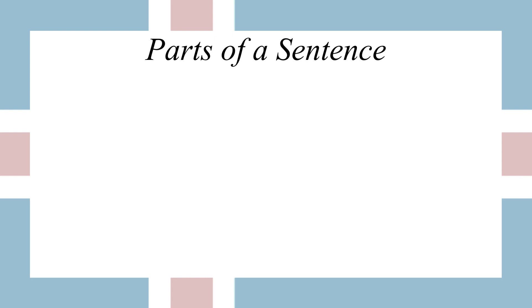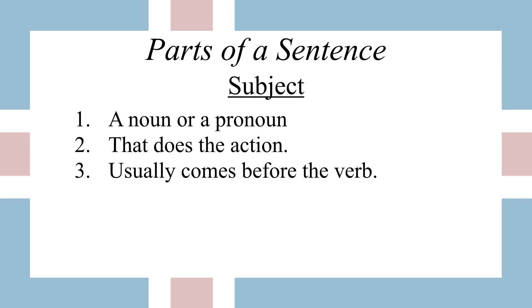In order to understand cases, we first need to get a little grammar background. We need to learn about the parts of a sentence, specifically the subject and the object. The subject is a noun or a pronoun — basically referring to a person, place, thing, or idea. The subject is the noun or pronoun that does the action, that does the verb. Usually you can tell what it is because it comes right before the verb, although not always.